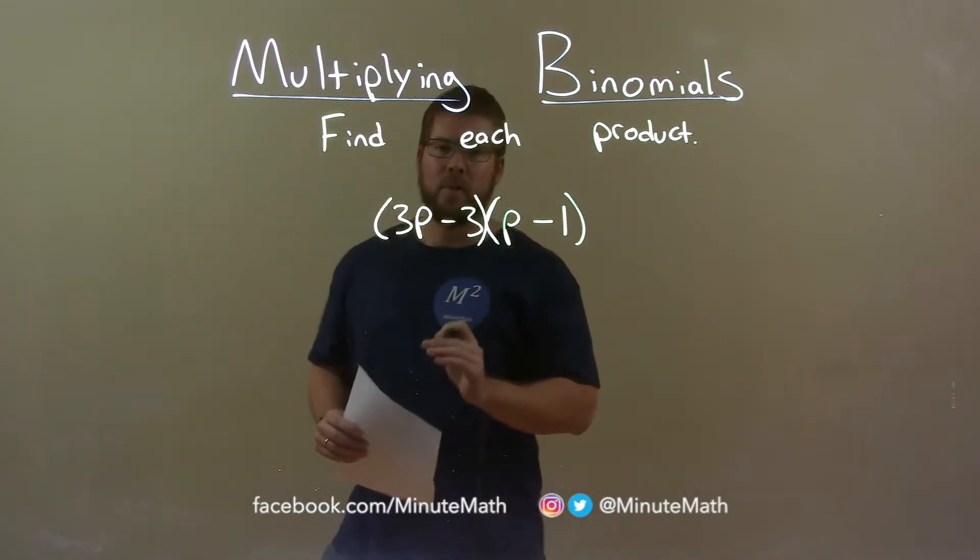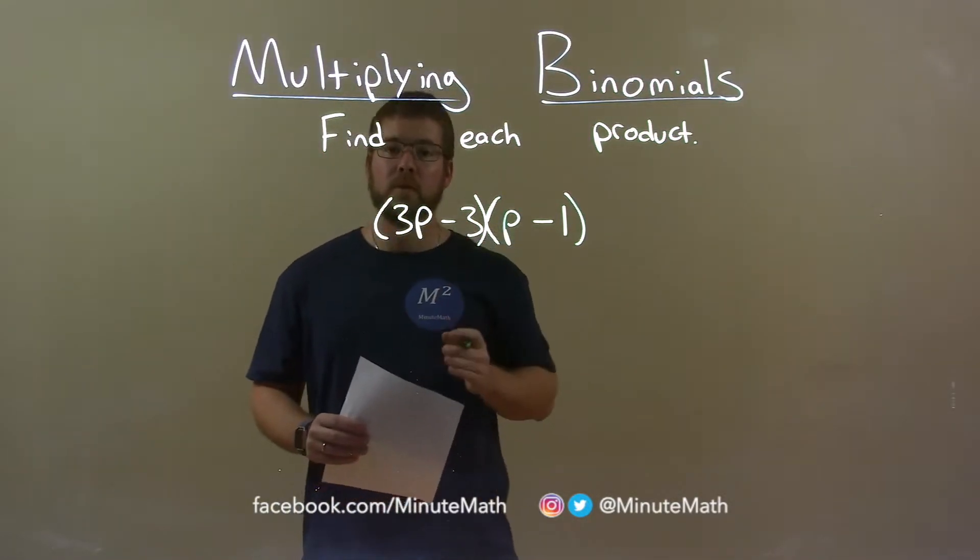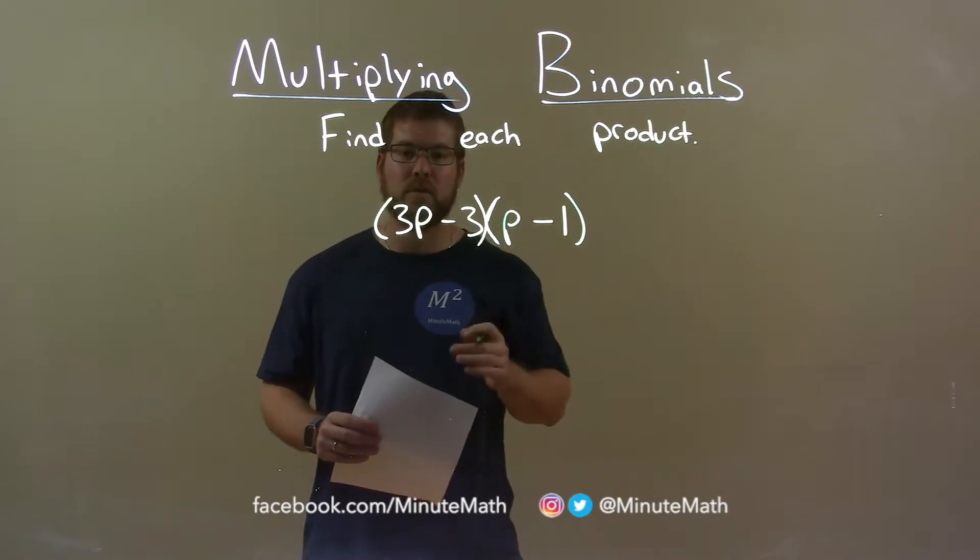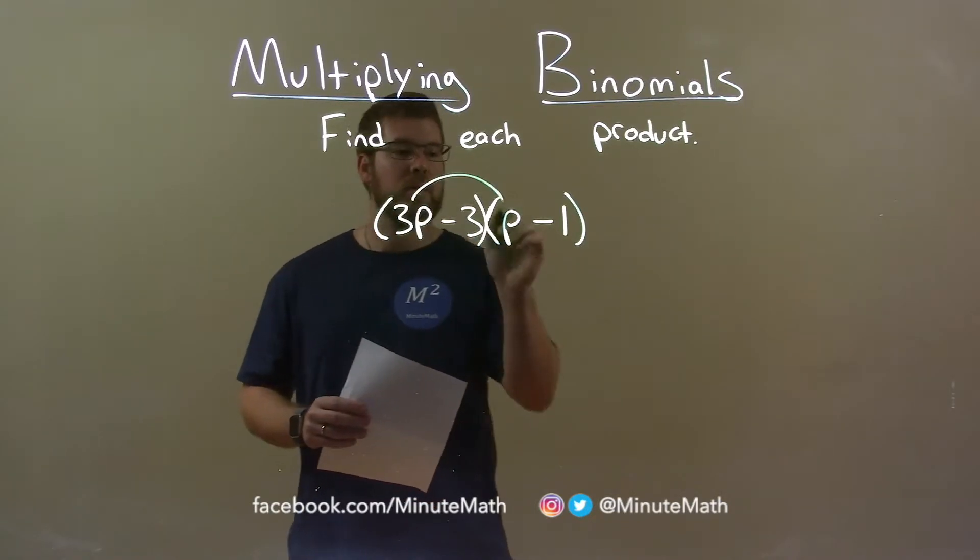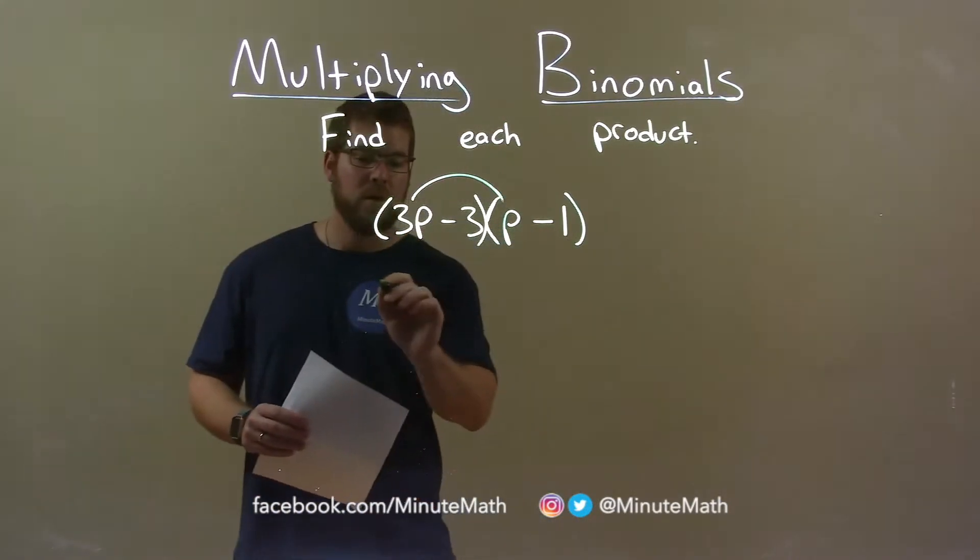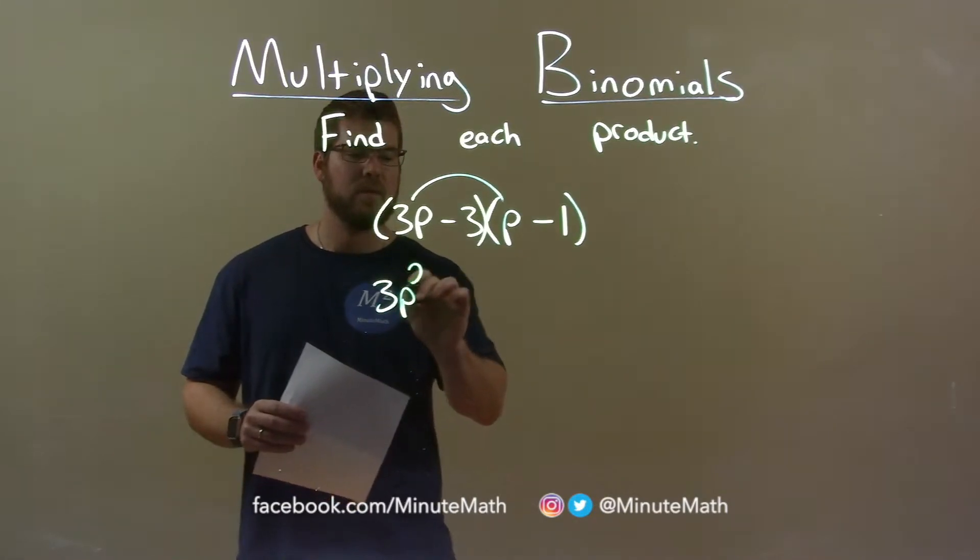We want to take all parts of our first parenthesis and multiply it by all parts of our second parenthesis. So 3p gets multiplied by p, which is 3p squared.